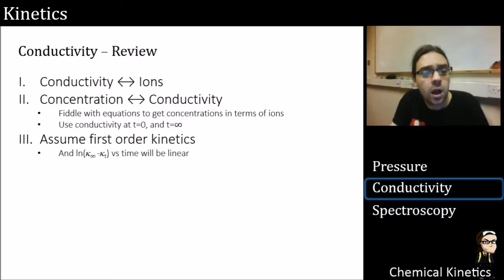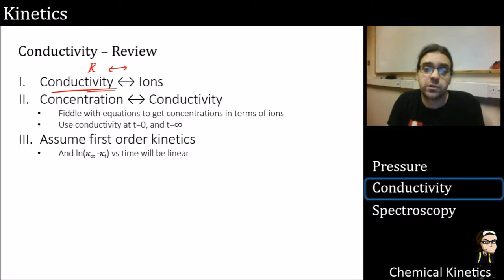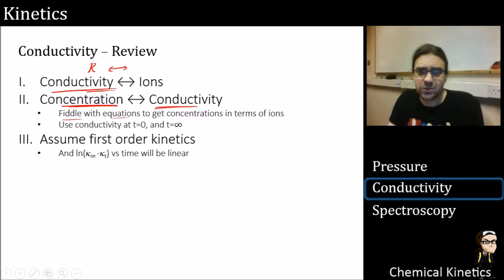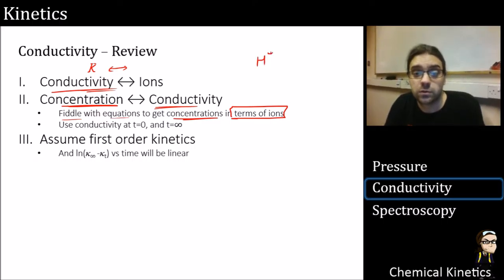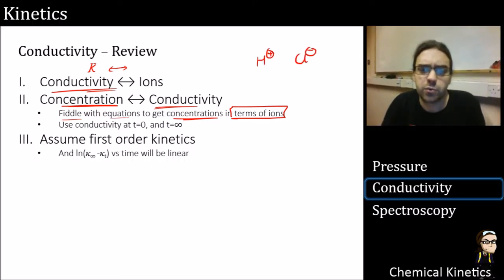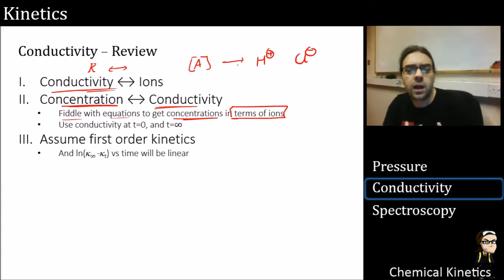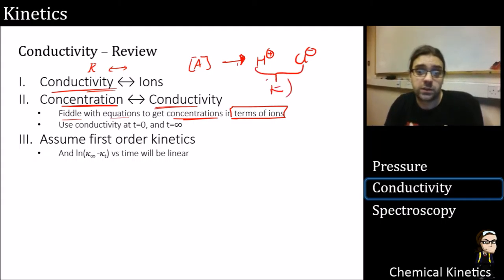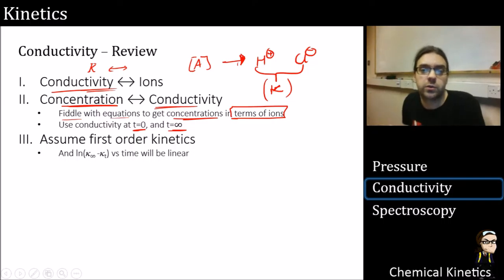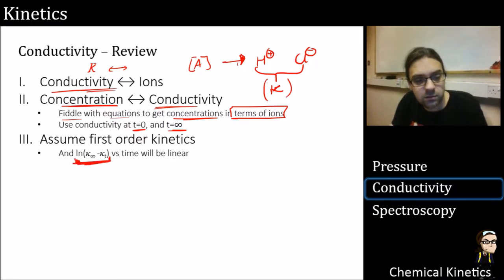Let's review conductivity: κ is related to the concentration of ions, so concentration is pretty much proportional to conductivity and we can use it in kinetics measurements. After some derivation, we can express concentrations just in terms of the ionic species. That means we can replace concentration with conductivity, using κ at time zero, any arbitrary time, and time infinity to plug in real numbers. Assuming first-order kinetics, a plot of log(κ_∞ − κ_t) versus time should be linear.